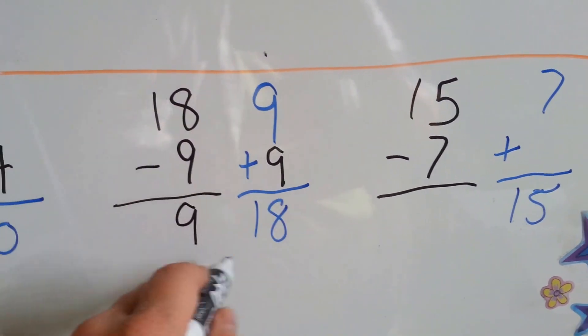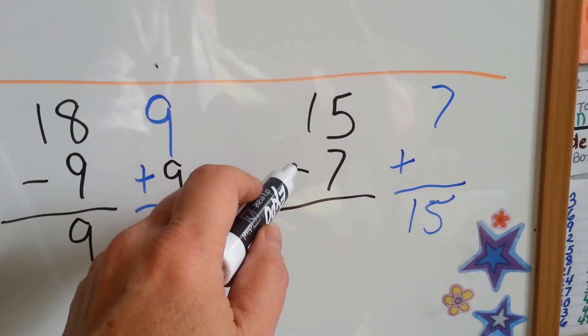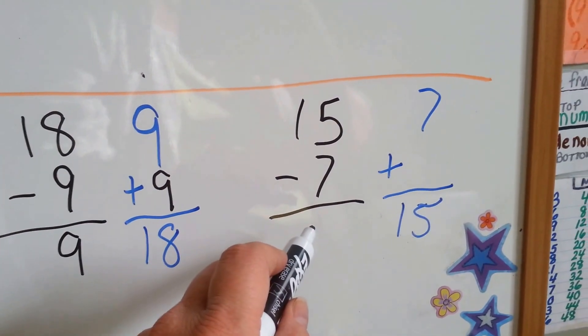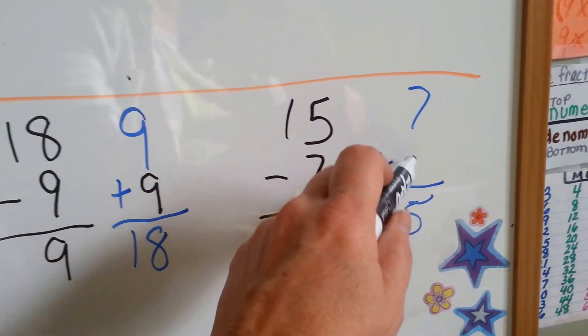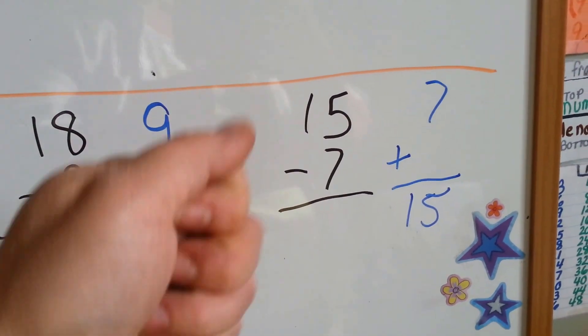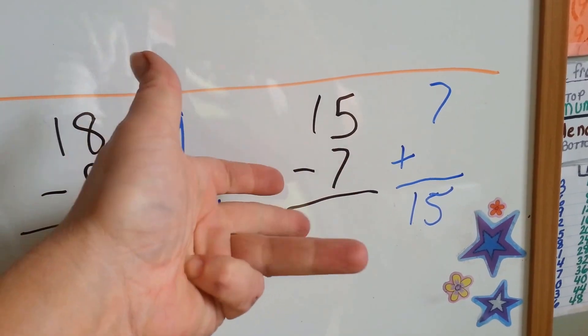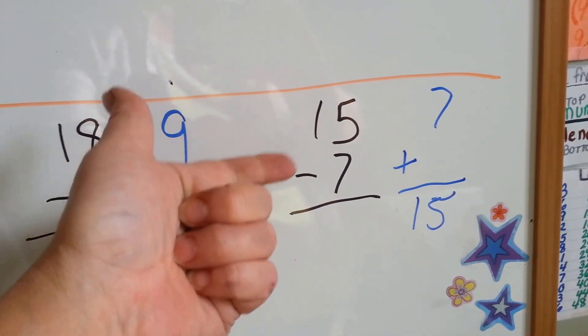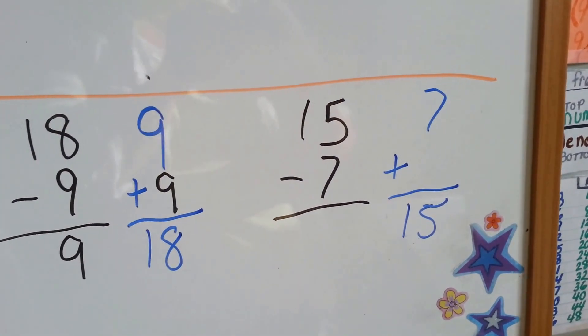15, that's a fact family. 15 take away 7 equals what? Well, 7 plus something is equal to 15. 7, 8, 9, 10, 11, 12, 13, 14, 15. That was 8 fingers.